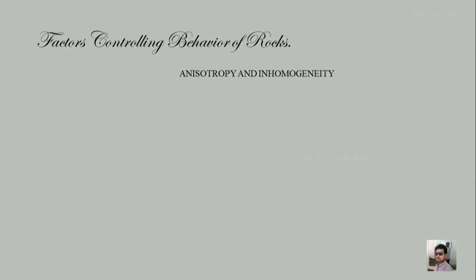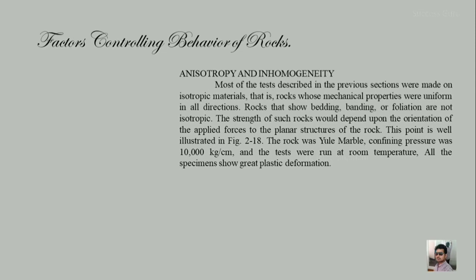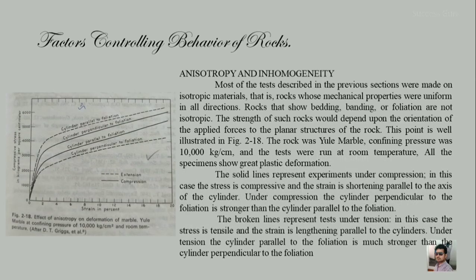The next factor is anisotropism and inhomogeneity. Most of the tests described were made on isotropic material — rocks whose mechanical properties are uniform in all directions. However, rocks showing bedding, banding, or foliation are anisotropic; their strength depends on the orientation of the applied force relative to the planar structure of the rock. The figure uses Yule marble at a confining pressure of 100,000 kg/cm² at room temperature. The solid line represents compression and the dashed line represents extension — a cylinder perpendicular to foliation versus one parallel to foliation.